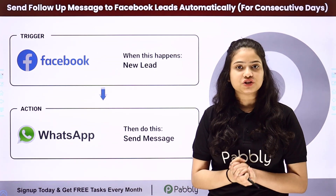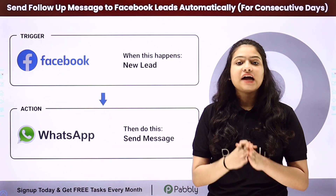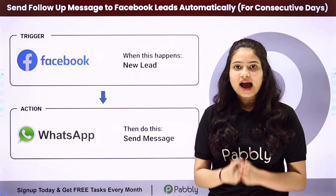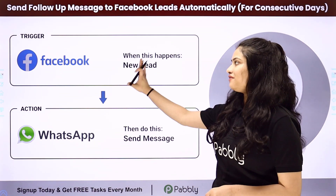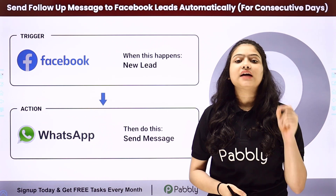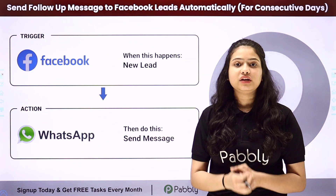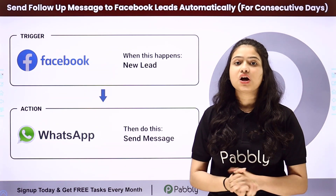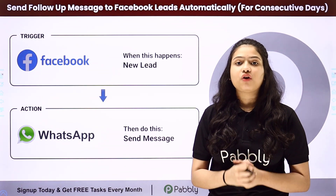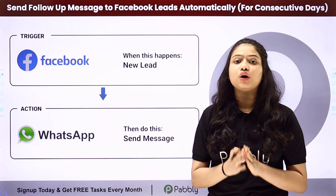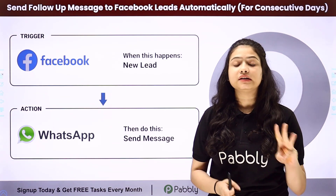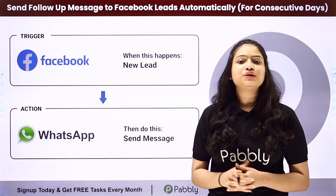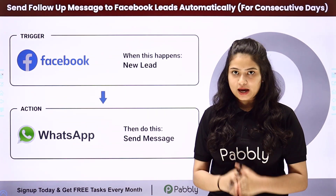Let's suppose I'm having an event management company and to promote my business, I'm also running an ad campaign on my Facebook page. Now I want that as soon as a new lead is generated through Facebook lead ads, automatically a follow-up message should be sent to that same lead on WhatsApp for continuously three days. So how are we going to automate this entire process?